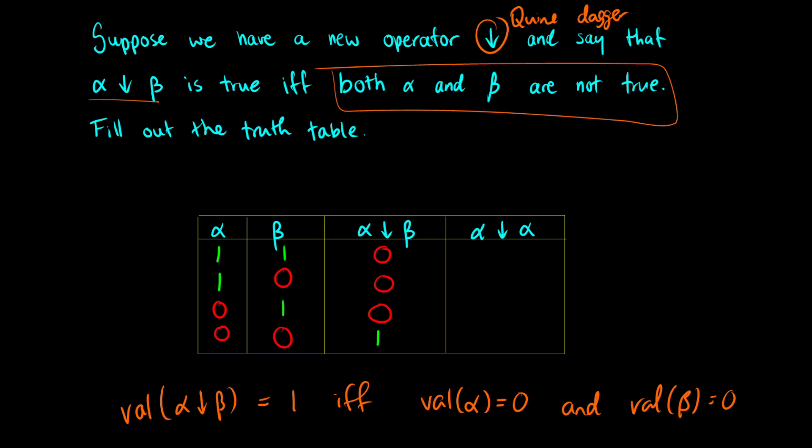Alpha down alpha should be true only when alpha is false and alpha is false. So basically, alpha down alpha is true in the last two rows because alpha is false. So that is the same thing as saying zero down zero, zero down zero. In the first two rows, alpha is true, so it's like saying one down one, one down one. But that should be false then because we need both of those things to be false. So alpha down alpha is just going to be zero, zero, one, one.